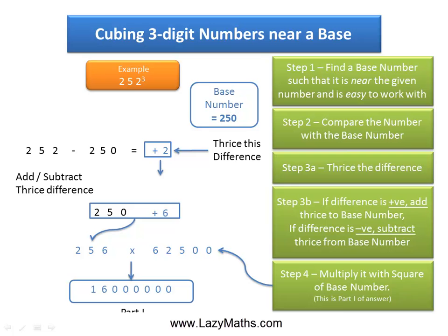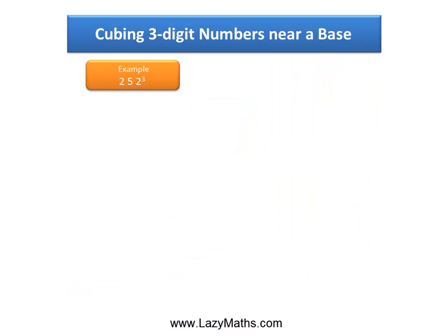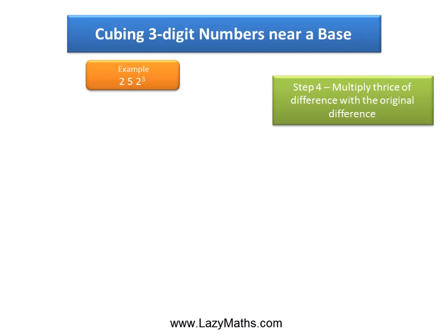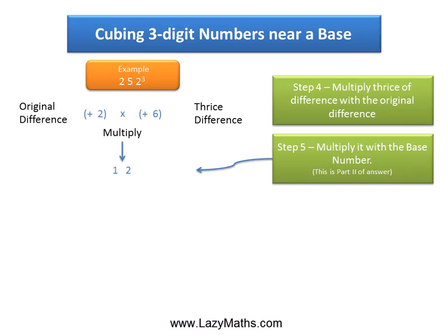Now let's look at how to get Part 2 of the answer. Again, we look at the original difference, plus 2, and thrice of the difference, plus 6, and we multiply these two numbers together to get 12. And then, we need to multiply the 12 with the base number 250, and we get 3,000 as Part 2 of the answer.